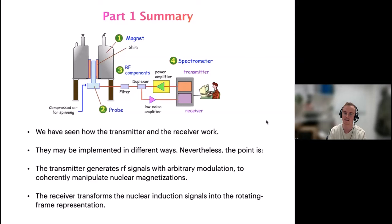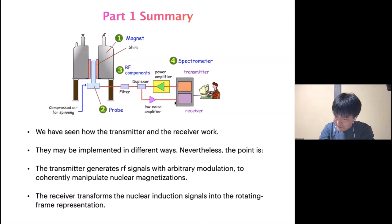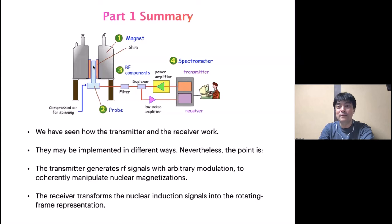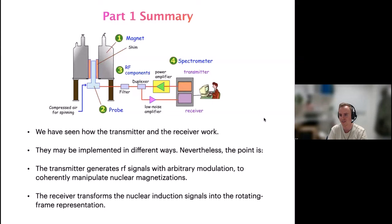A follow-up question: is the low-noise amplifier on the board or closer to the probe? The low-noise amplifier is outside the scope of the spectrometer. You need to use a good LNA because it almost entirely determines the overall signal-to-noise ratio for a given magnetic field and probe quality. Once the signal is strong enough, RF noise from outside is also less important.